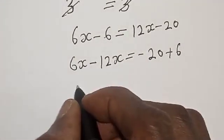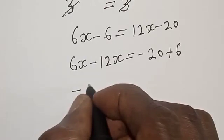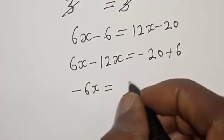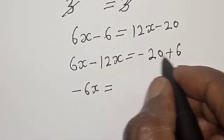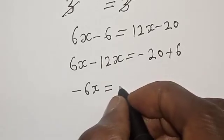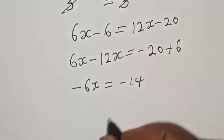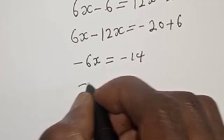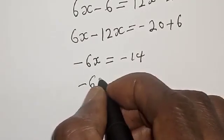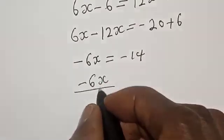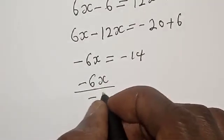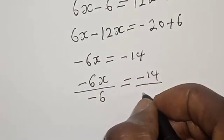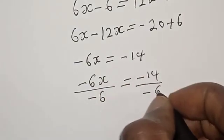We get 6x minus 12x, which is minus 6x, is equal to minus 20 plus 6, which is minus 14. Then we divide both sides by minus 6. We have minus 6x over minus 6 is equal to minus 14 over minus 6.